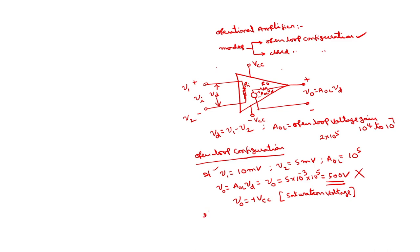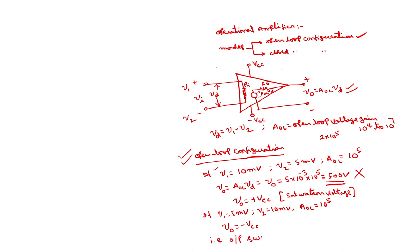On the other hand, if V1 is 5 millivolts and V2 is 10 millivolts with the same Aol of 10 to the power of 5, the output would theoretically be minus 500 volts, but it saturates to minus Vcc. This means the output of the operational amplifier in open loop configuration switches between two states: plus Vcc and minus Vcc, acting as a switch.